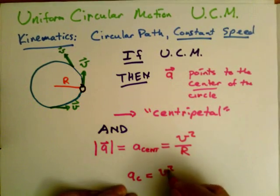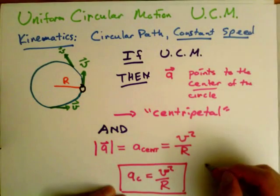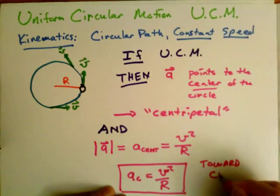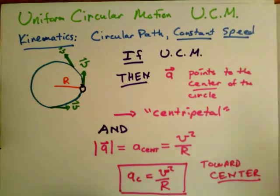A sub C equals V squared over R. Centripetal acceleration, the acceleration points to the center. Its magnitude is constant and it's V squared over R toward the center. That's our kinematic description of the motion.